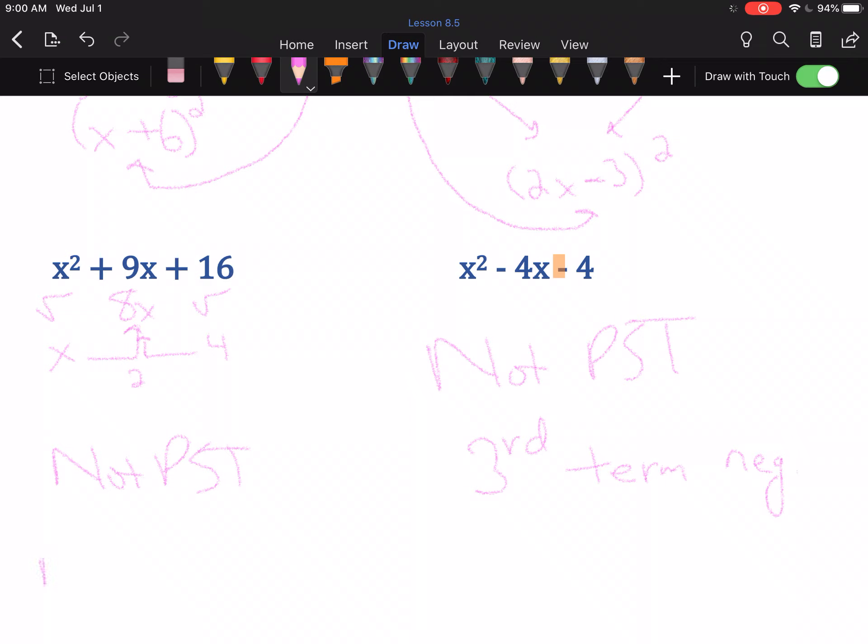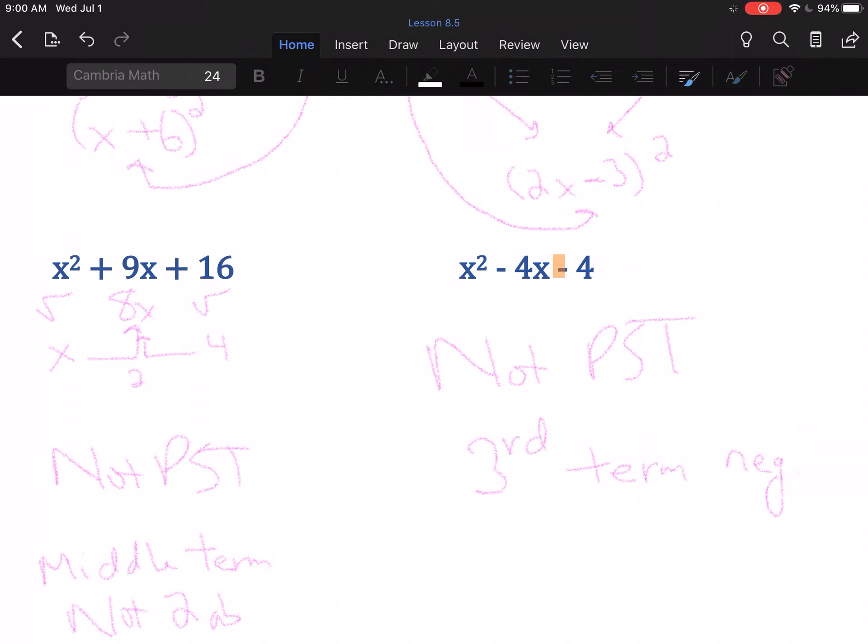And why this one is because middle term not 2ab. I realize there's no a and b here, but it's the short form notation of saying the middle term didn't fit the pattern. So that's one pattern you've got to look for. You're learning two patterns today. That's one of them.